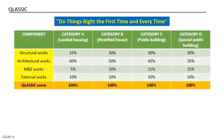There are four categories in the scope of assessment: landed housing, stratified housing, public building, and special building. The assessment checks four areas which include structural works, architectural works, M&E works, and external works. In the notes you can see examples of how the assessment is carried out, such as the evenness of a surface. The score allocation is based on category, totaling 100%.